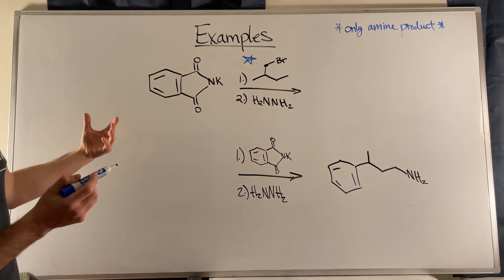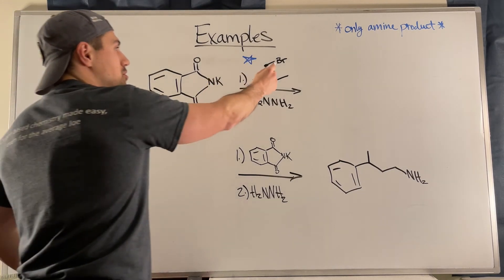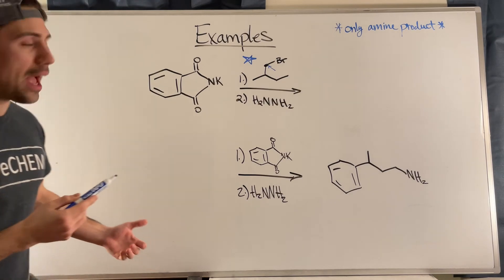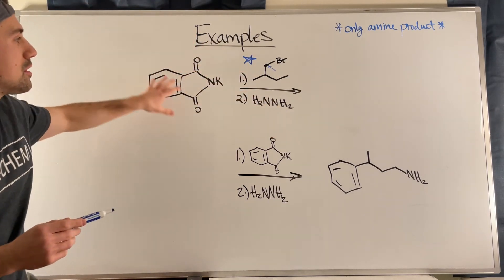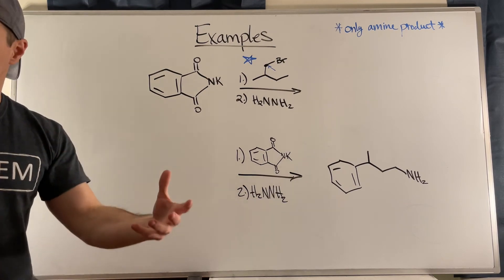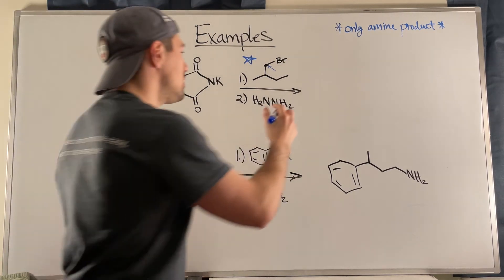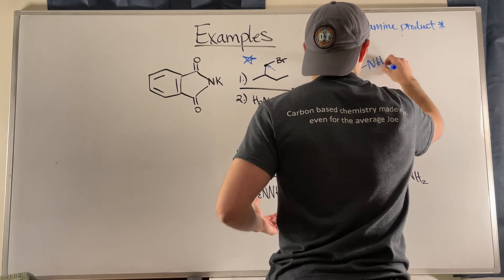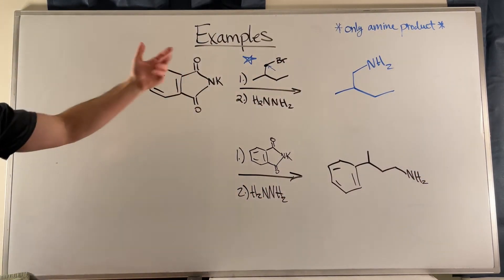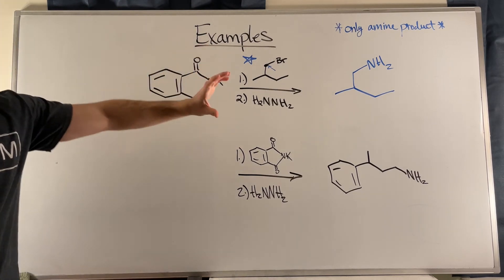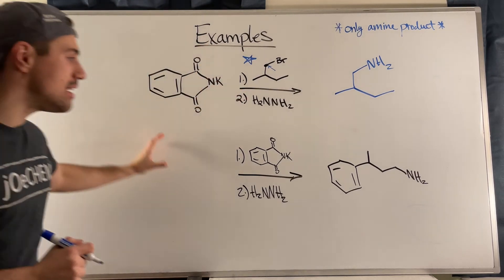So when you see this, what I kind of want you to think is, you see a good leaving group, you're just going to be sticking an amine right here, okay? You know that the hydrazine is going to help clean you up and produce that very characteristic cyclic product that you always form. So really what you're doing is just taking where you have your good leaving group and just tacking on an NH2 versus a bromine or whatever your leaving group might be. It's that simple, okay?